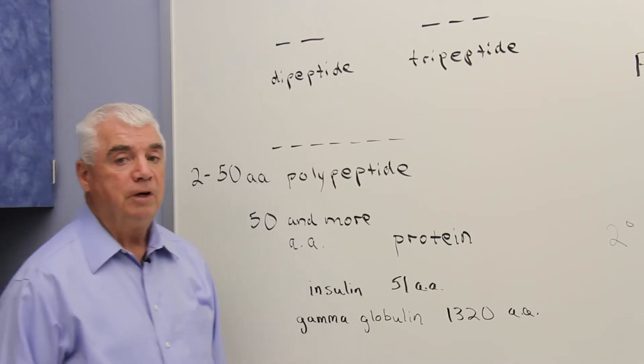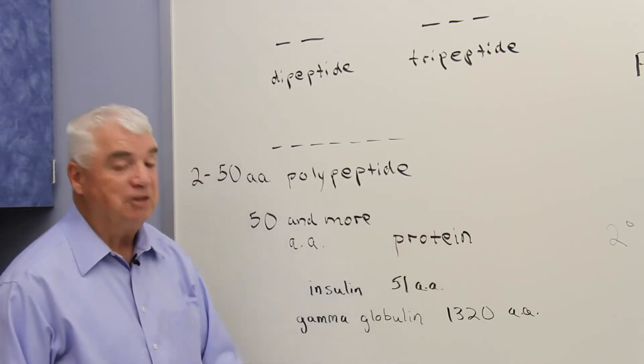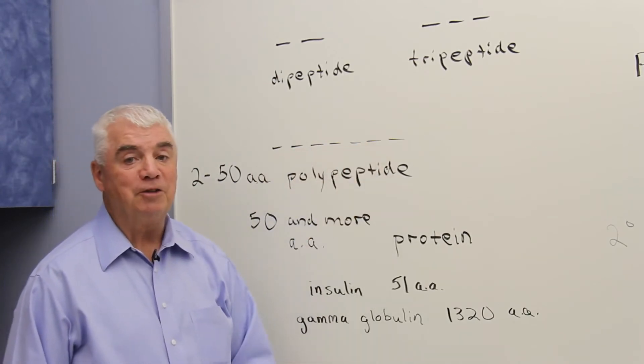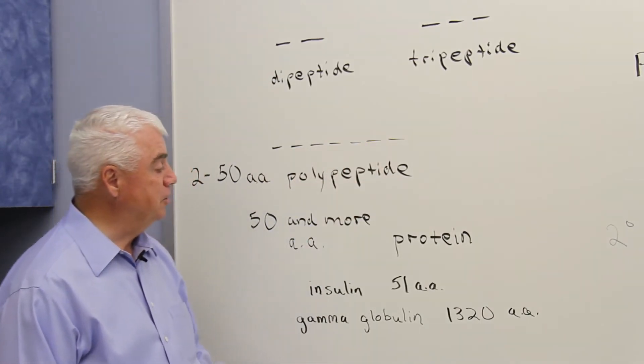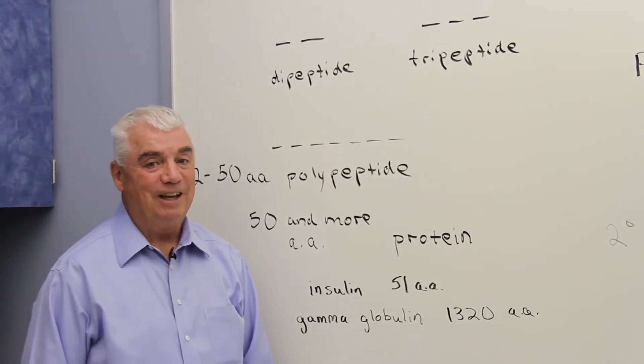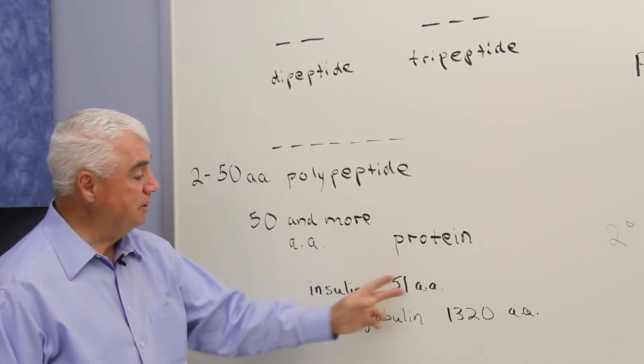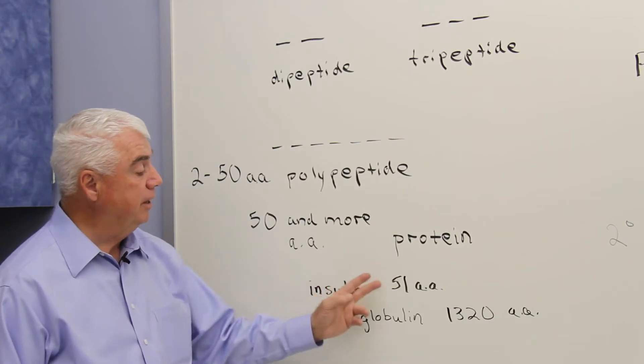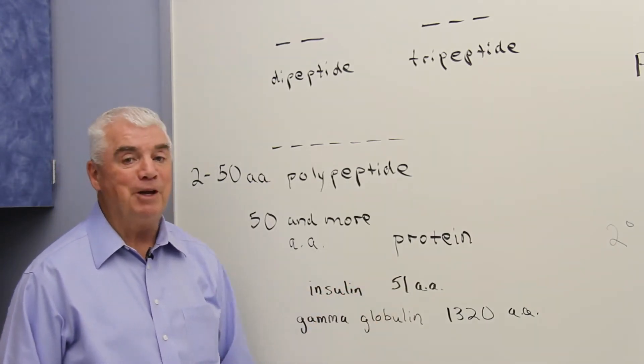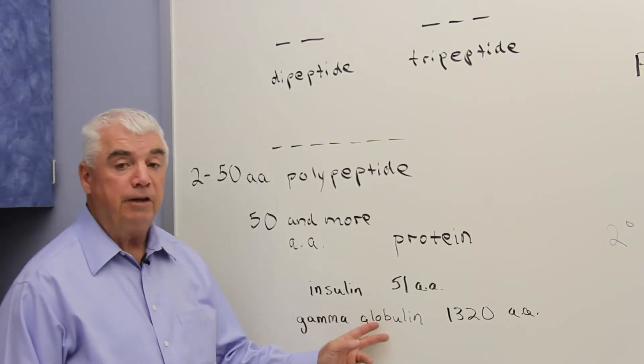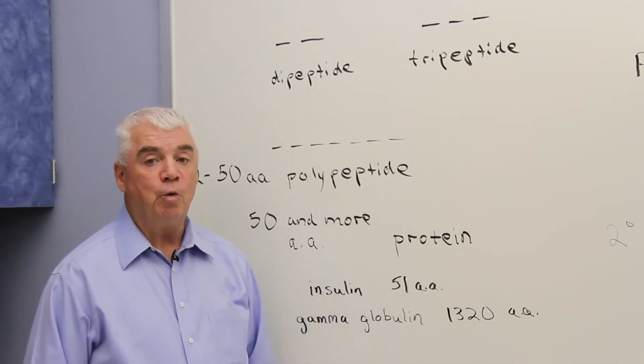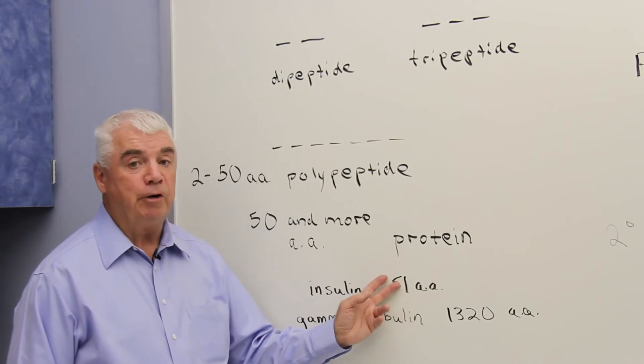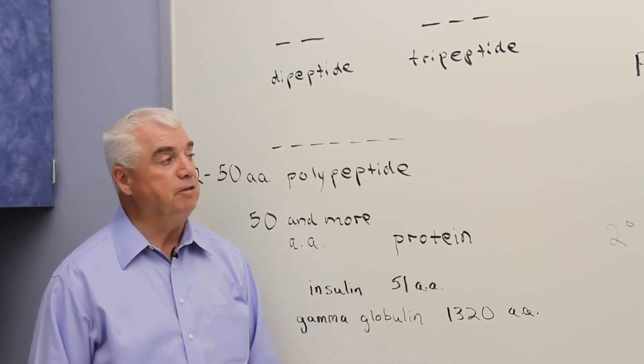If you wanted to get a Nobel Prize by deciphering the structure of a protein, that is identifying each of the amino acids that are linked together to comprise the structure, well you'd want to pick a pretty short, a pretty small protein. And that's what was done. The very first protein that was deciphered, whose structure was deciphered, is that of insulin. It has 51 amino acids. Gamma globulin protein in the bloodstream has 1,320 amino acids, so they can vary quite a bit. This would be a very small protein, and we have proteins with thousands of amino acids.